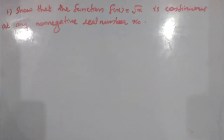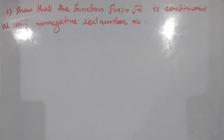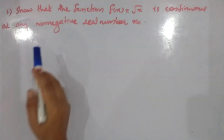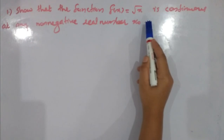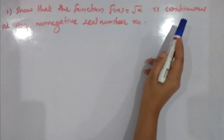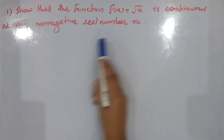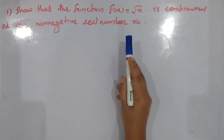Limit is continuity. We will define continuity. Let's go to the question. First question: show that the function f(x) = √x is continuous at any non-negative real number x₀.